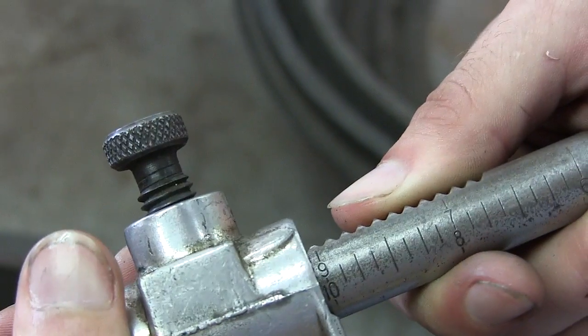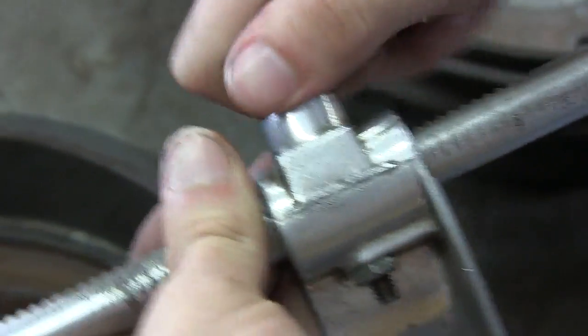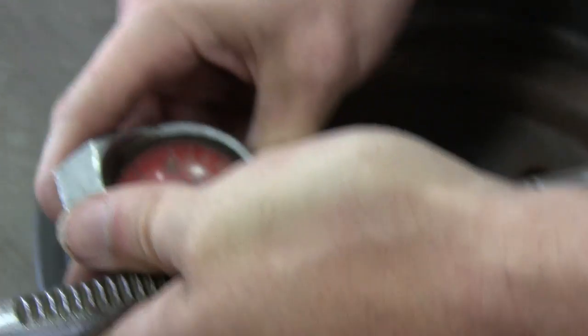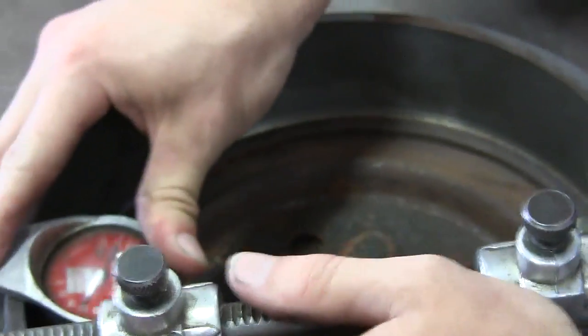Now what was your starting measurement on your drum? 9.060. So you're trying to determine if that drum is bigger - that's the service limit of that drum, is that right? Now he's got that on there. Explain to me what that nine means.